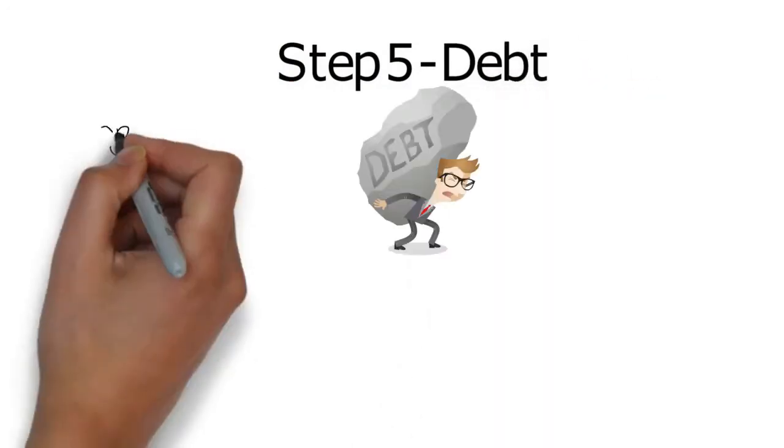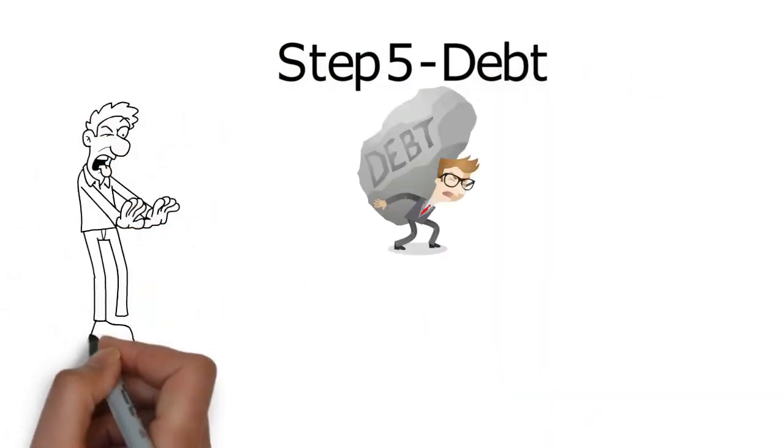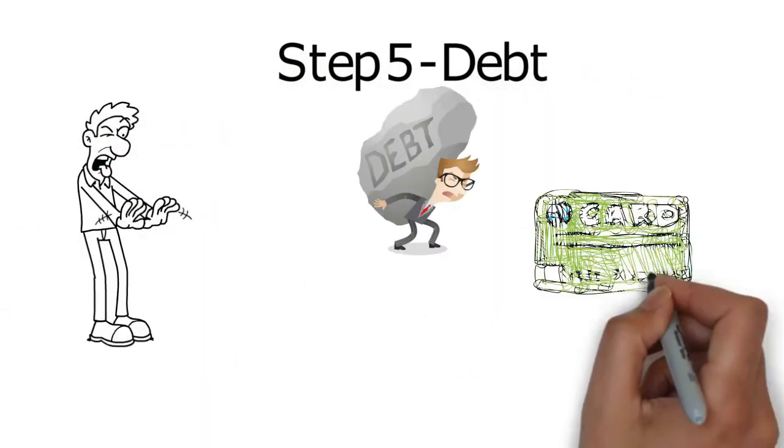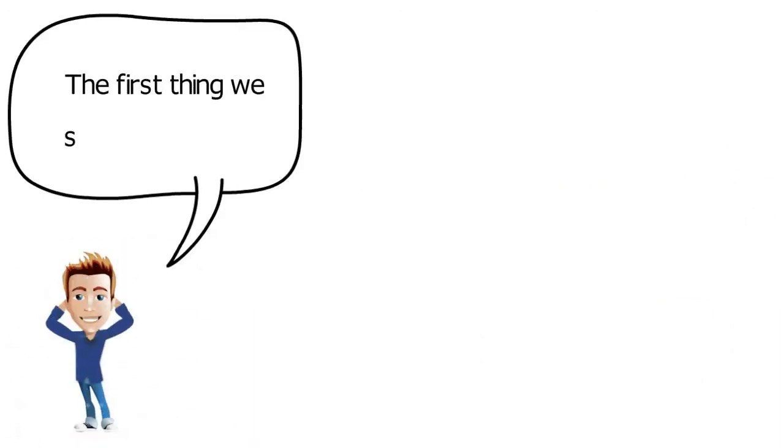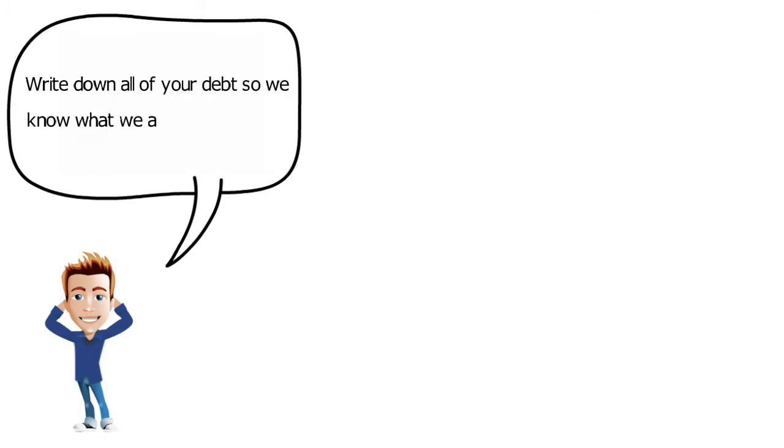Step 5: Debt. Sam was not looking forward to this step. He had an uneasy feeling that his credit card debt was creeping up each month, but Dave was calmer. He said the first thing we should do is write down all your debt so we know what we're dealing with, then we check if you have any of the red flags that could indicate a significant problem.